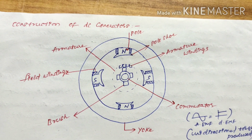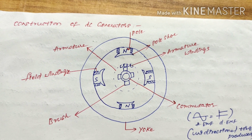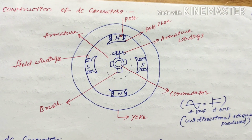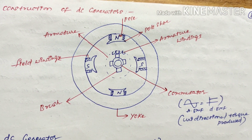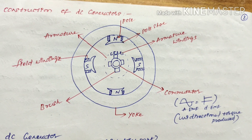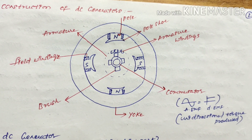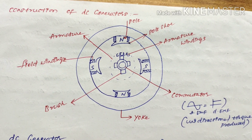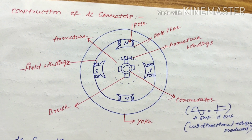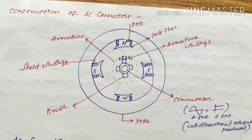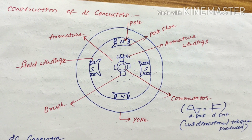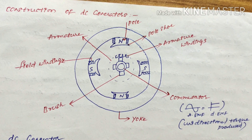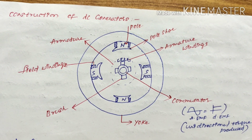Bearings are used for continuous operation of the machine. For heavy machines that must rotate every moment with high processing requirements, bearings are used. The commutator is used for converting alternating EMF to direct EMF — it produces unidirectional torque, meaning alternating EMF gets converted into direct EMF by the commutator.